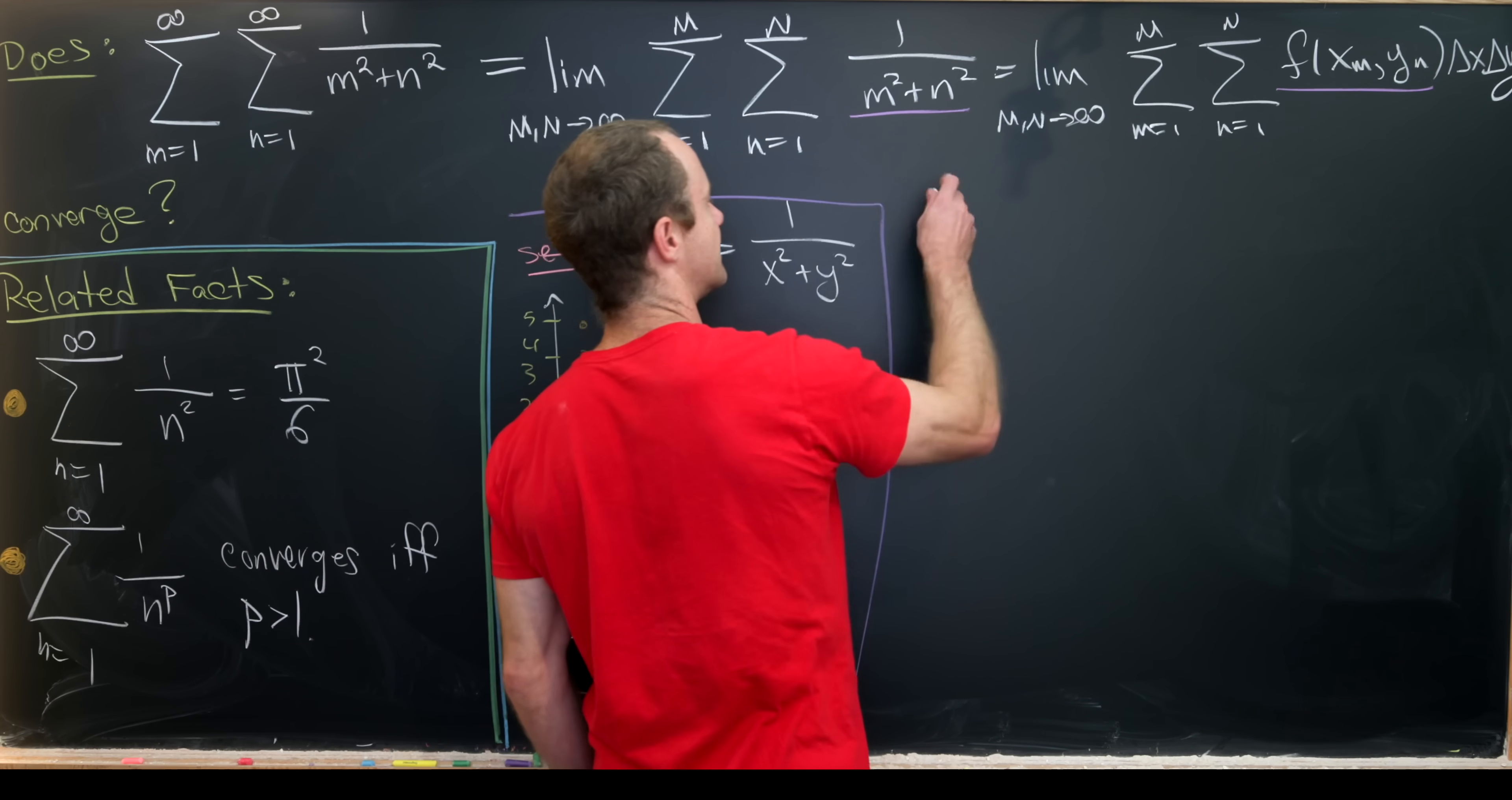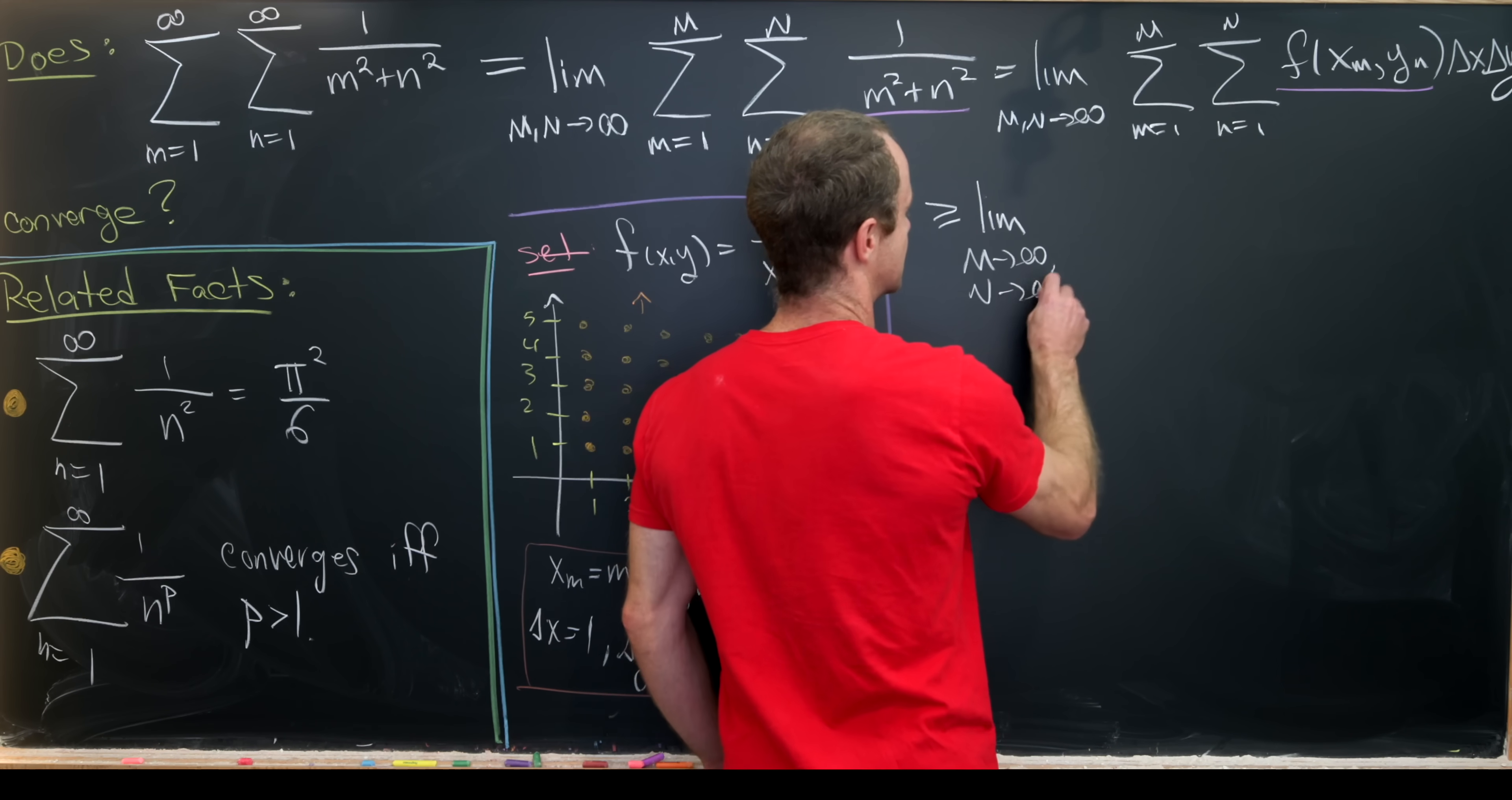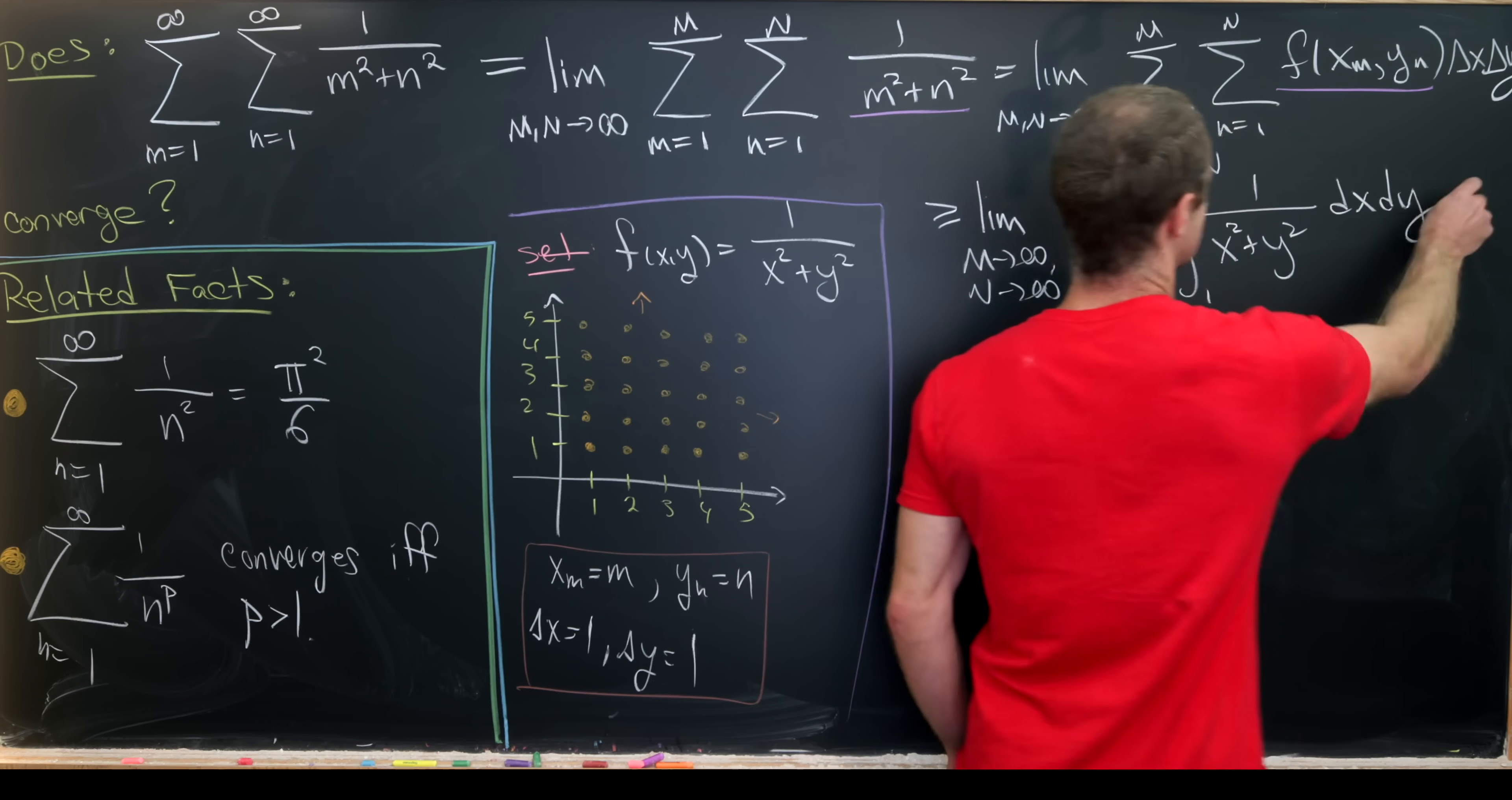And the inequality will favor the sum. In other words, we'll have that all of this is bigger than or equal to the limit as capital M and capital N go to infinity of the integral from 1 to M, 1 to N of 1 over x squared plus y squared dx dy.